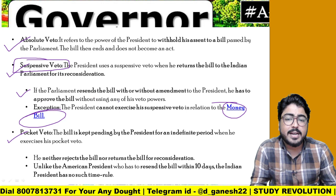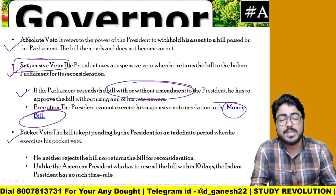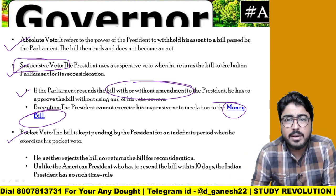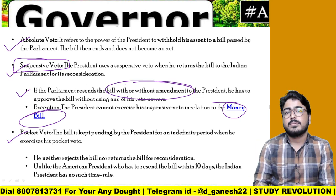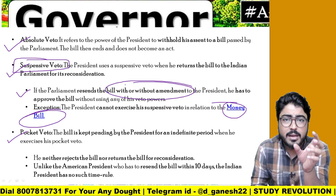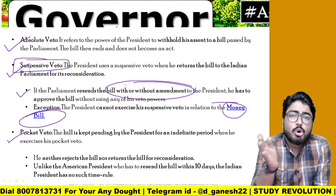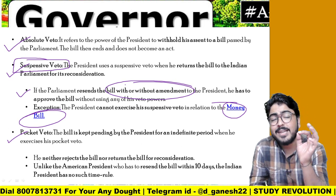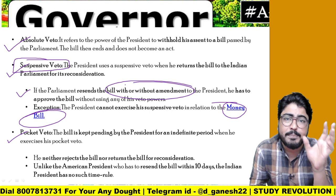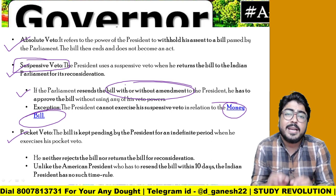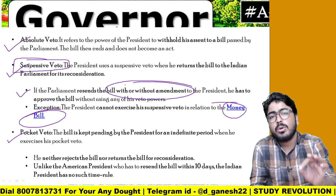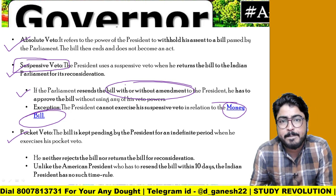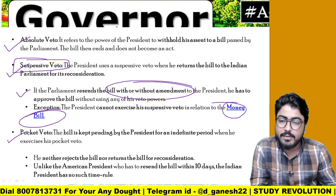If the president sends the bill back with or without amendment, and it is a money bill, the president or governor cannot send it back for reconsideration. But in the president's case, if parliament passes the bill again with or without amendment, the president should give assent to that bill. This is an important point to understand.